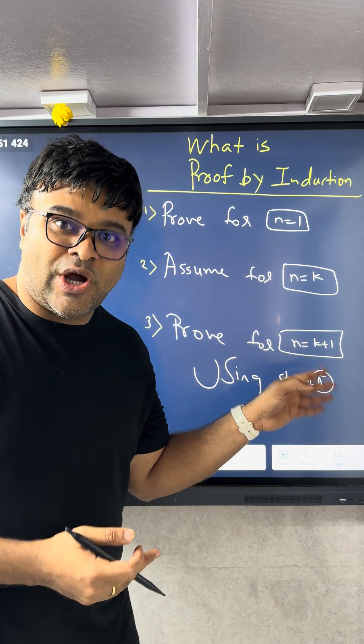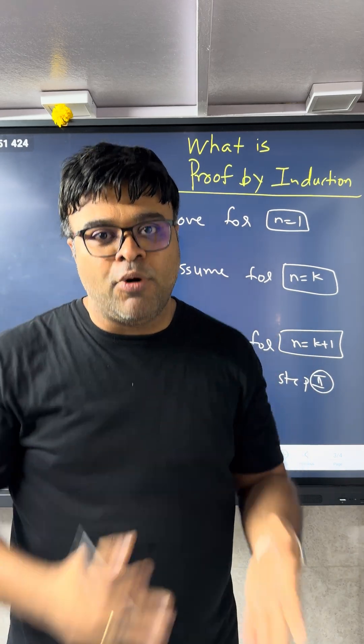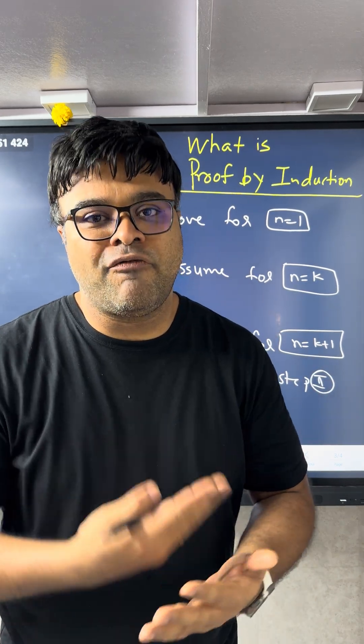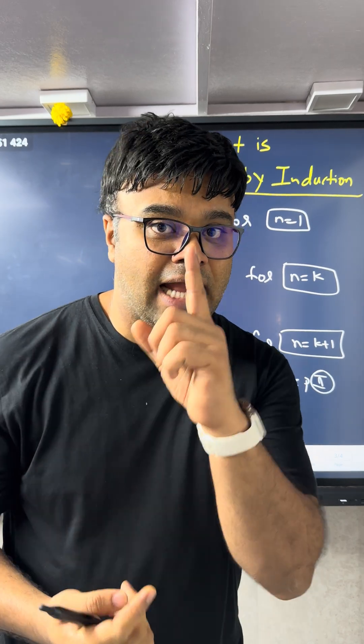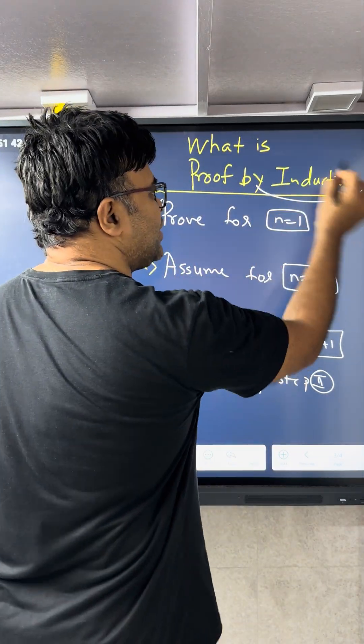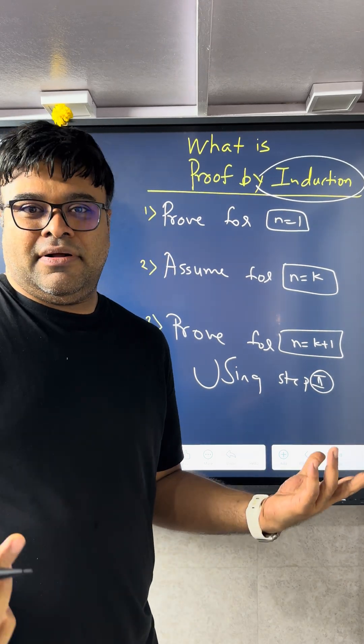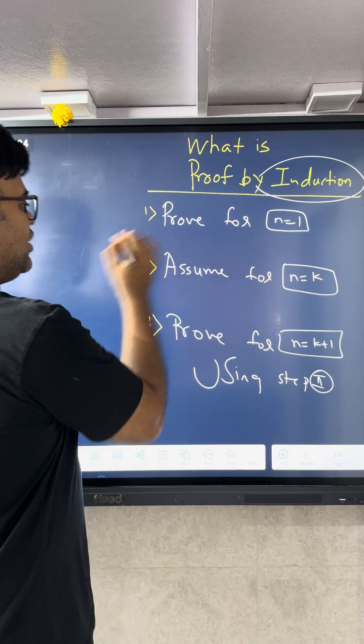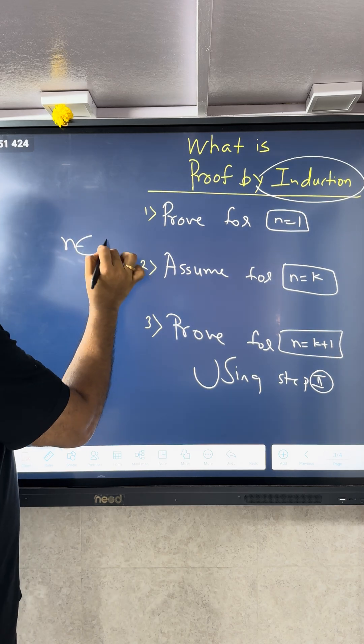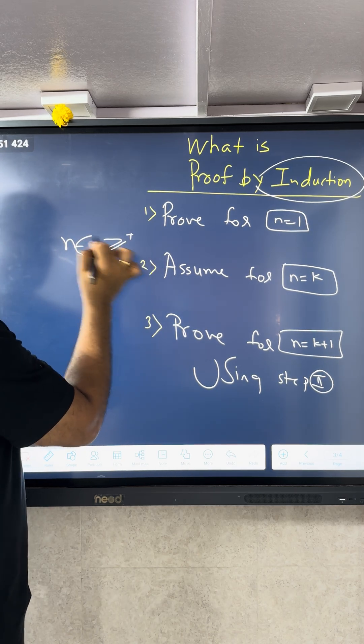So every two consecutive numbers are proved, that means it is proved for all integers. But now that's very important. Never, you cannot use method of induction for a real number. You can use it only when you know that n is a positive integer.